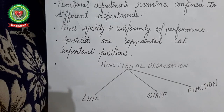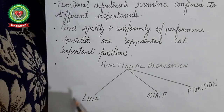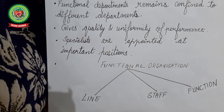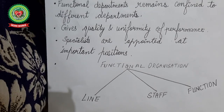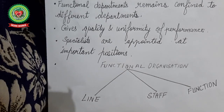Staff specialists are appointed at important positions to guide and protect the organization from competitors and their strategies. A functional organization is generally comprised of line, staff, and function — line structure is not absent but goes simultaneously with functional structure. In every functional organization, complexity is resolved, there is less burden on the line organization, and functional organization tries to recover all the demerits of line organization through its efficiency.